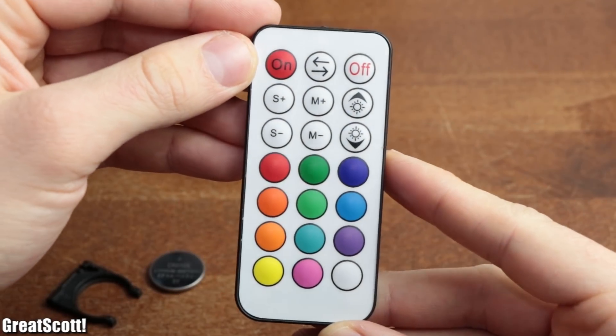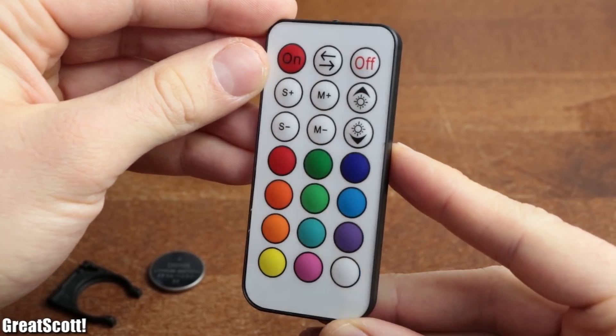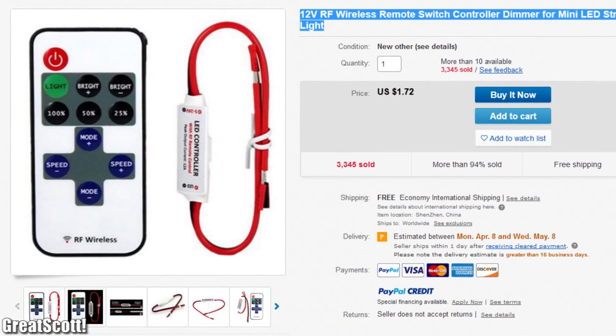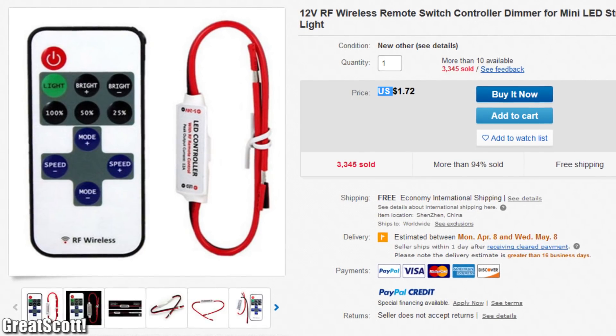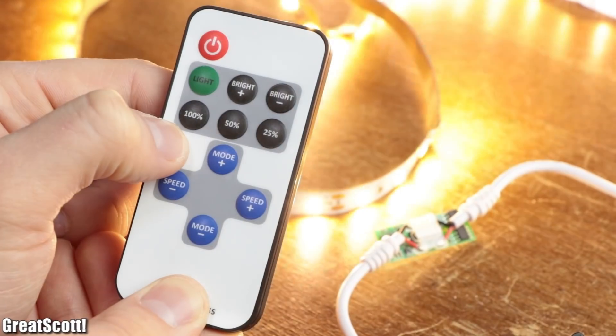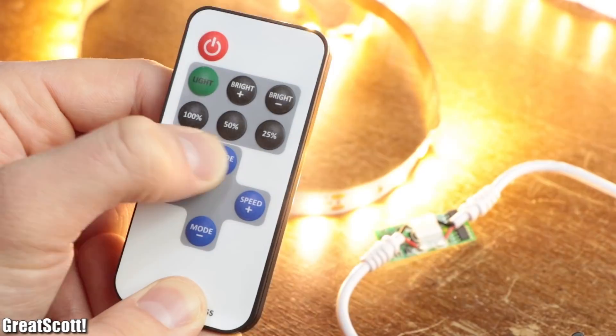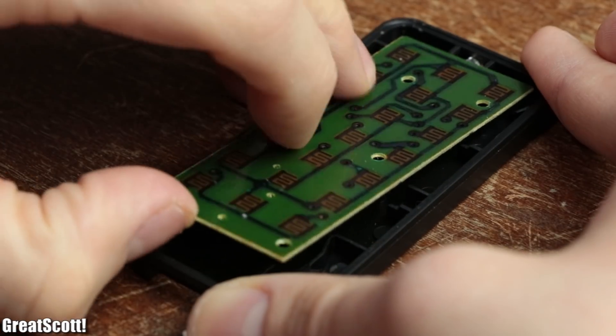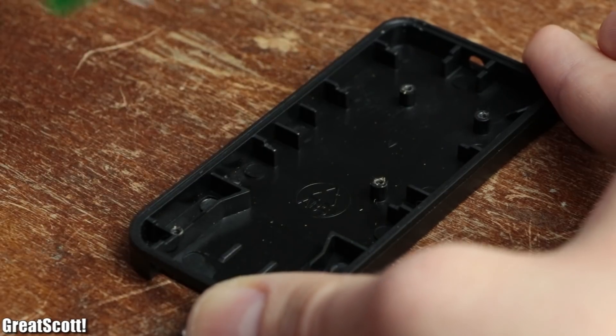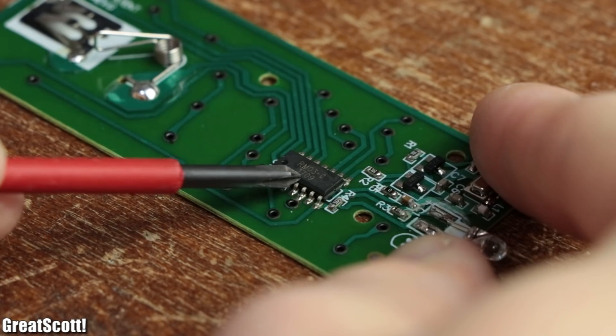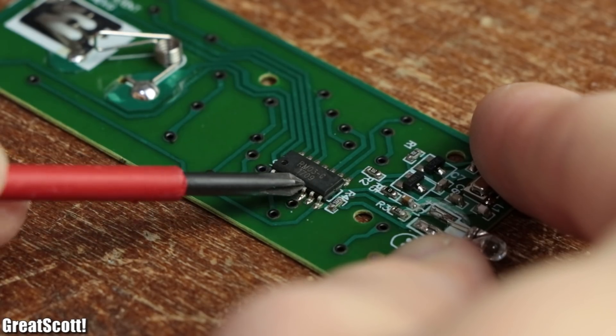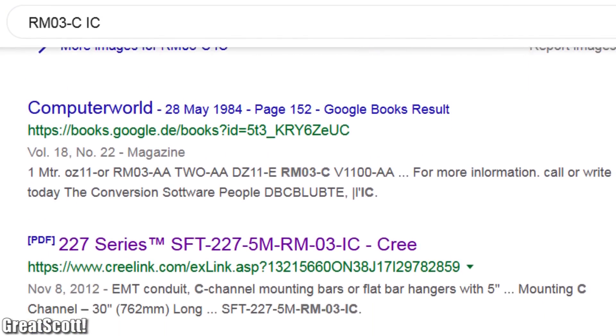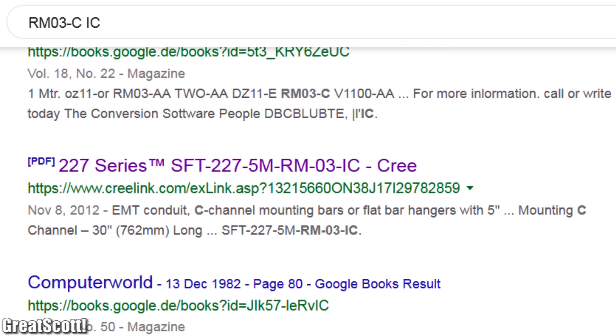To start off we should have a look inside the RF remote. But since I didn't want to destroy it I rather ordered myself another RF LED strip remote with receiver which also do that job without a problem. So I took apart the remote in order to pull out the main PCB which is apparently built around an RM03-C IC. Only problem was that I found absolutely no information about this IC on the internet.